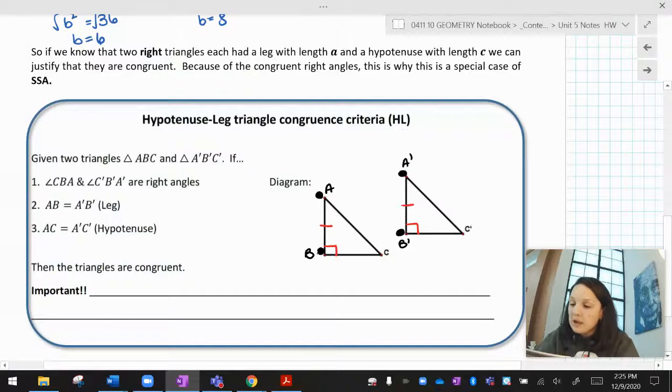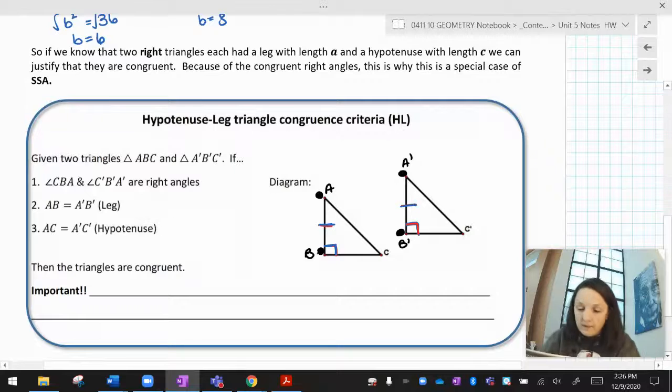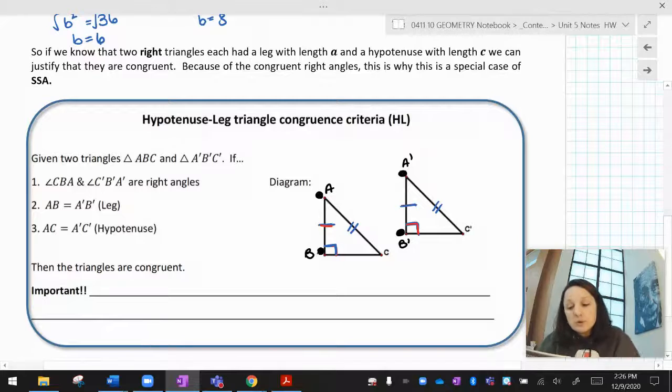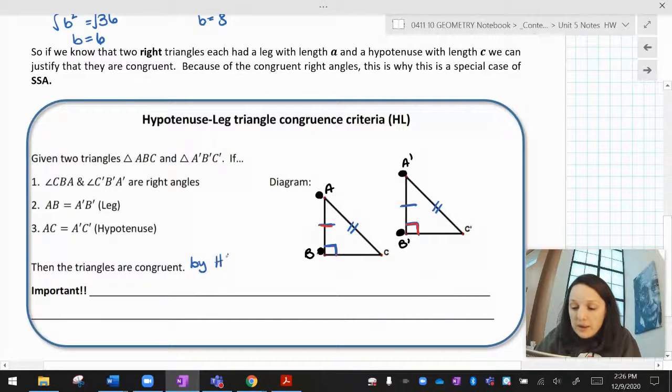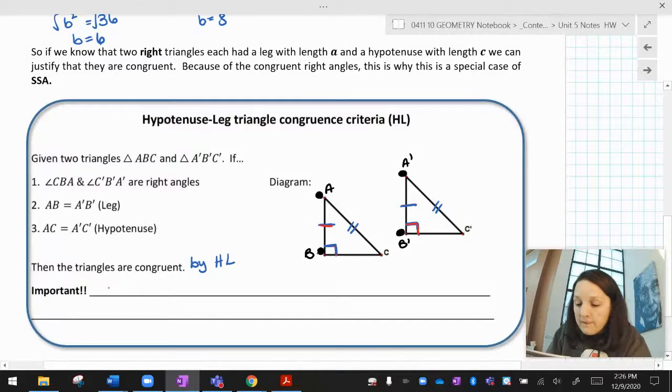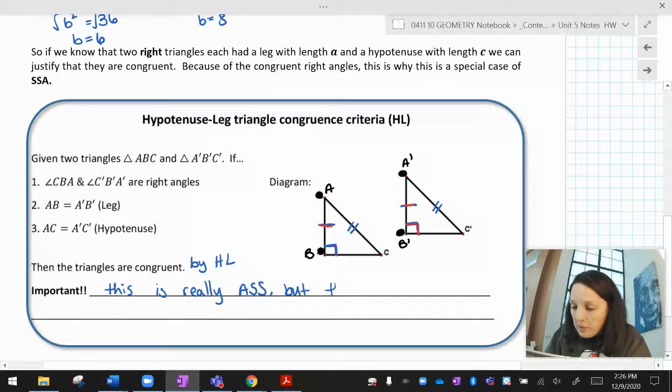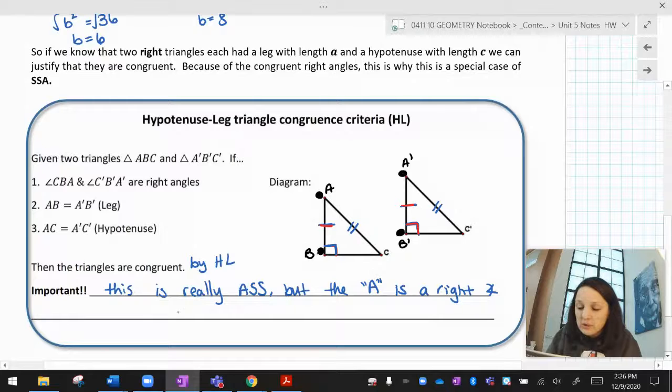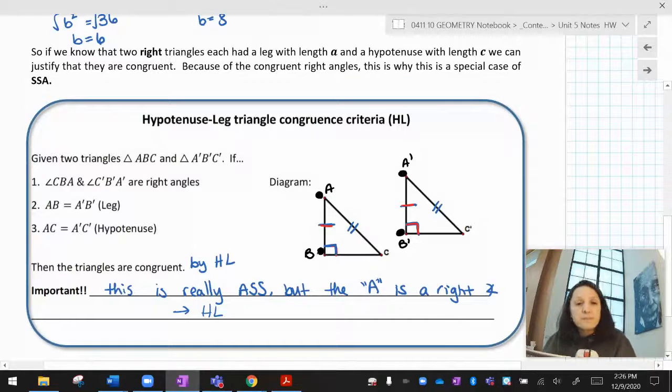Now given two triangles, ABC and A prime B prime C prime, if CBA and C prime B prime A prime are right angles, and if AB equals A prime B prime, that's a leg, and if AC equals A prime C prime, that's a hypotenuse. What I notice here is I have ASS. But if you notice you have ASS, but your angle is a right angle, then the triangles are congruent by HL. So what's important here is that this is really ASS, but the A is a right angle. And then instead, once I notice the A is the right angle, then we call it HL.